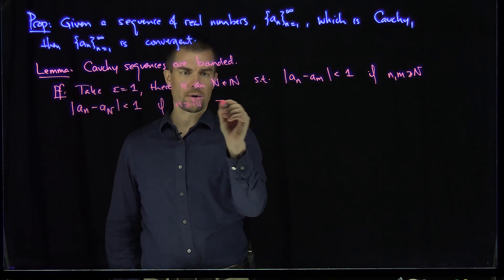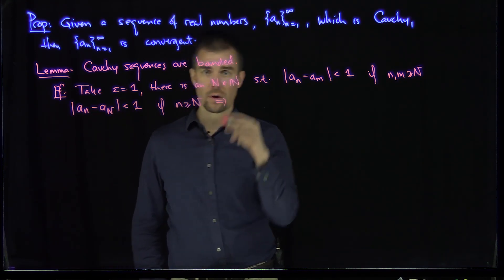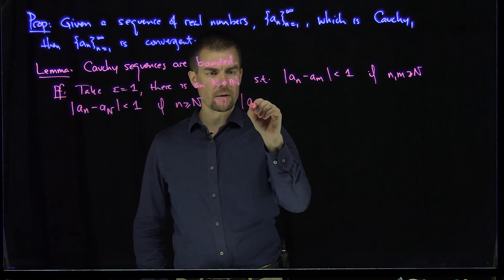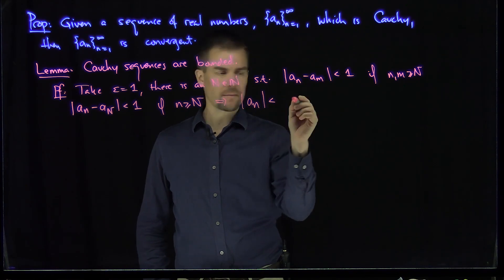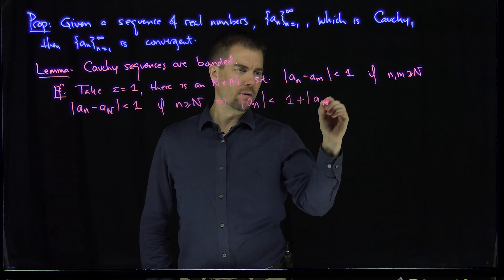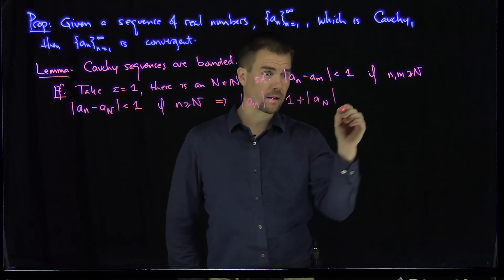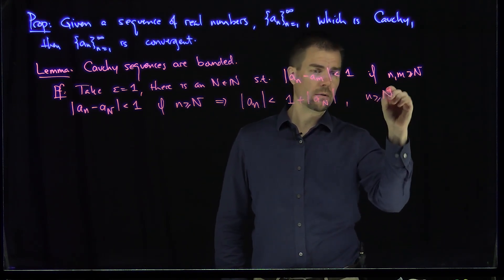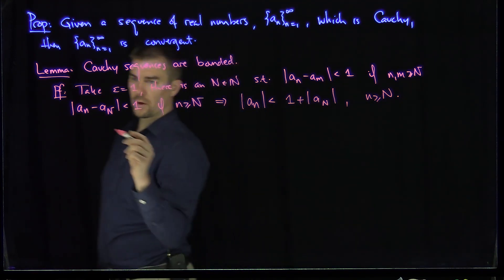And so this tells me, therefore, that a_n, rearranging this inequality using the triangle inequality, I can conclude that |a_n| is less than 1 plus absolute value of a_N. And this is valid for all n larger than N capital.